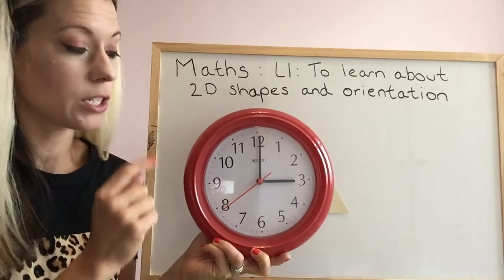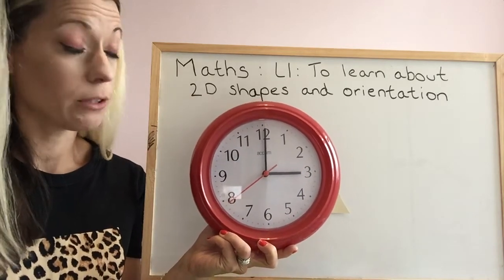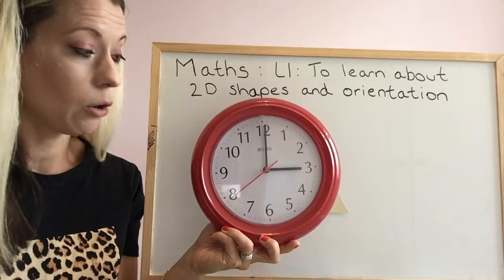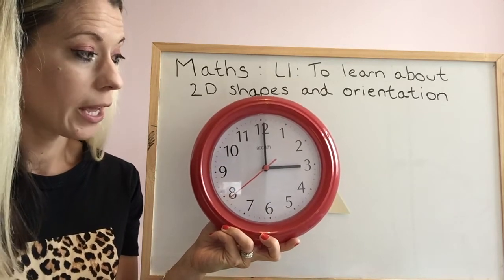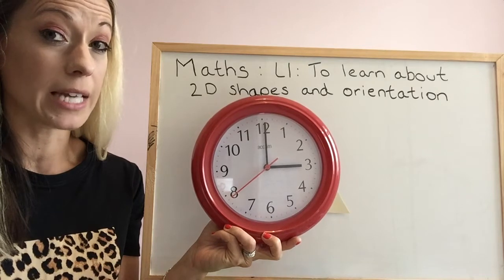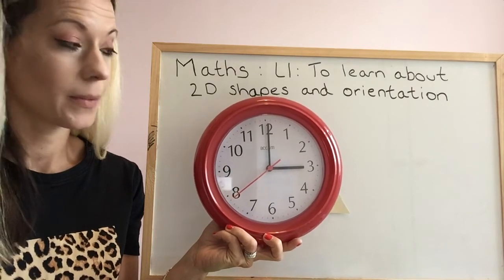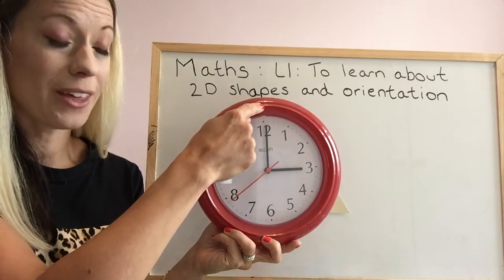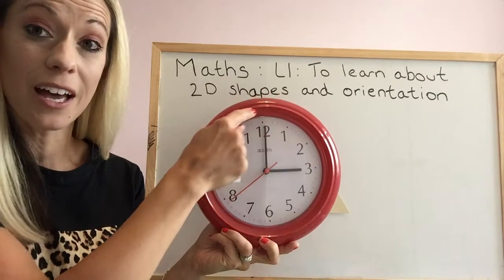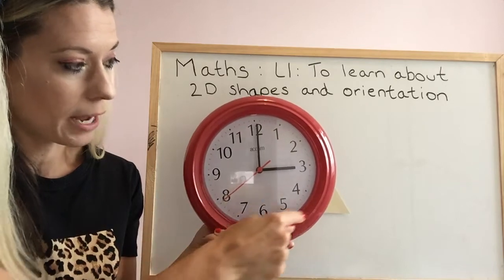Now if we wanted to go anti-clockwise, which way do you think that would be? Can you put your finger on this clock and move it round in the way that you think is anti-clockwise? Did you do this? Well done! Anti-clockwise is this way round.